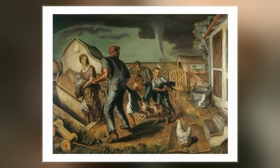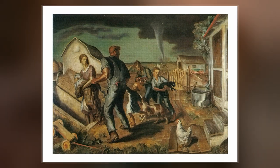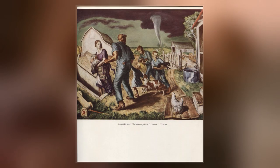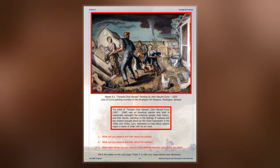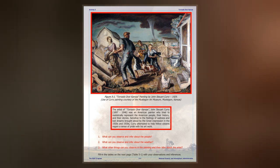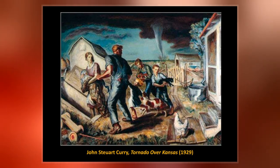Tornado photographs as well as Curry's personal life experiences likely influenced the work's composition. The work features a notably dramatic scene and has connections to Curry's earlier 1928 painting Baptism in Kansas. However, Tornado over Kansas' composition also contains some inconsistencies and technical errors.